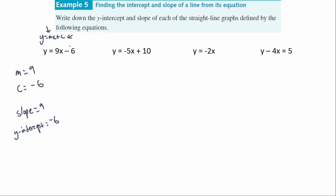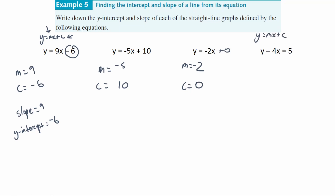Remember to always take the sign right in front of the number. For the next question, the gradient m is negative 5 — not just 5, make sure you include the sign — and the y-intercept c is 10. Next, m equals negative 2, and there's no c term, so it's technically plus zero, meaning c equals 0. The last one, y minus 4x equals 5, is not in y = mx + c form, so we need to rearrange it to get y by itself.